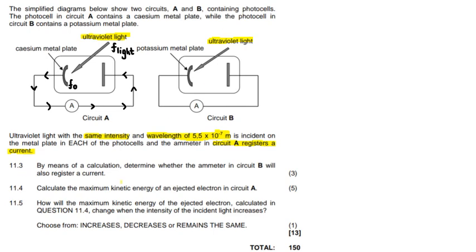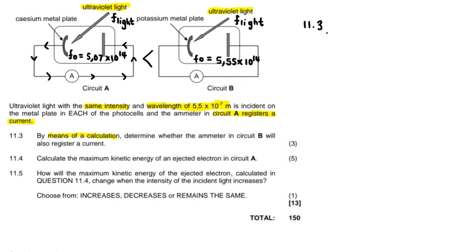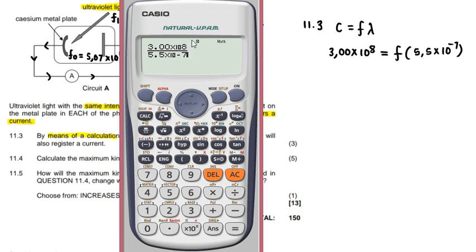Question 11.3 then says by means of a calculation, determine whether the ammeter in circuit B will also register a current. So how am I going to structure this? I think what I'm going to do is let's calculate the frequency of the ultraviolet light. So I'm going to say the speed of light is equals to frequency times lambda, since I'm given the wavelength that we are using. And then I'm going to substitute. So this is 3.00 times 10 to the exponent 8. And that's going to equal the frequency times the wavelength given is 5.5 times 10 to the exponent negative 7. So then if you plug these values into the calculator, we see that the frequency of light that we're using is currently 5.45 times 10 to the exponent 14.